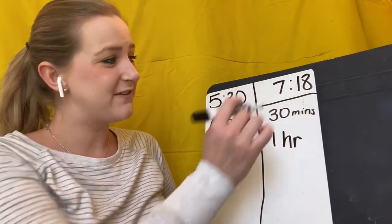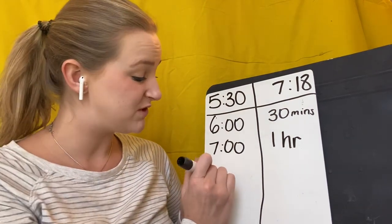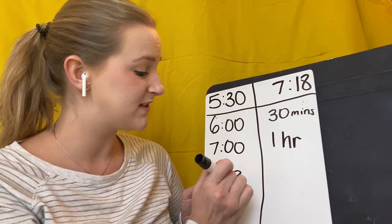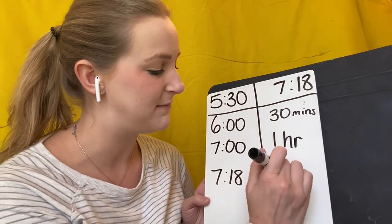Now I have to get from seven to seven 18. Now that one's super easy because from seven o'clock to seven 18, all I have to add are those last 18 minutes.